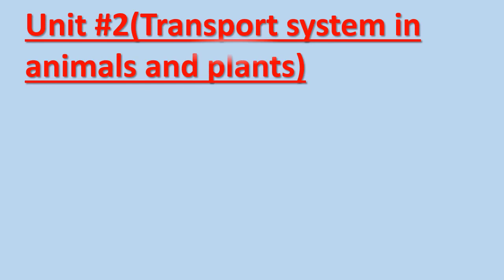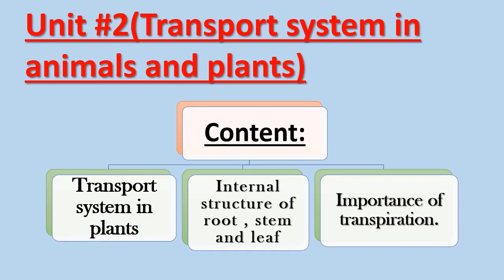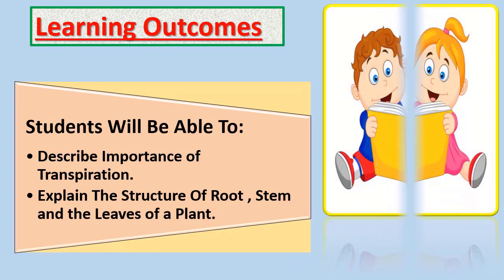The unit number 2 topic is Transport System in Animals and Plants. In this unit we will discuss the transport system in plants, internal structure of root, stem and leaf, and importance of transpiration. At the end of this lesson, students will be able to describe the importance of transpiration and also explain the structure of root, stem and leaves of a plant.